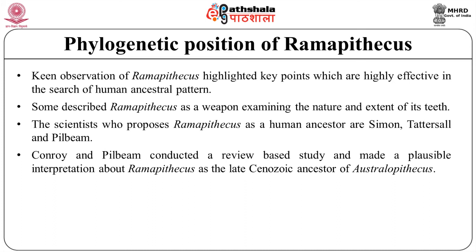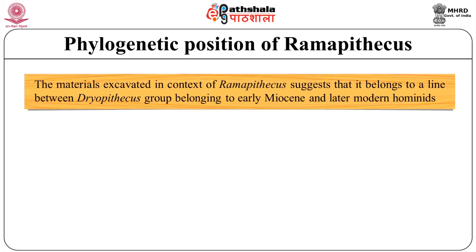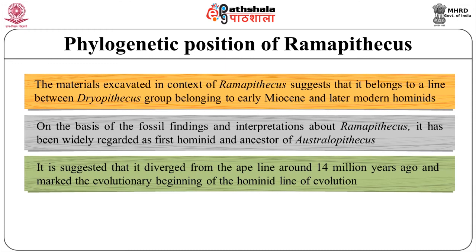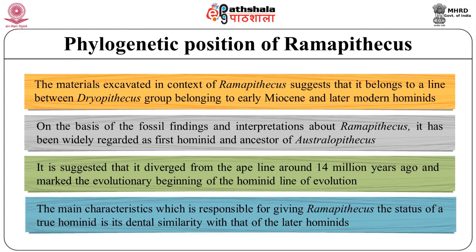Conroy and Pilbeam conducted a review-based study and made a plausible interpretation about Ramapithecus as the late Cenozoic ancestor of Australopithecus. However, the material excavated in the context of Ramapithecus suggests it belonged to the line between the Dryopithecus group of the early Miocene and later modern hominids. On the basis of fossil findings and interpretation, Ramapithecus has been widely regarded as the first hominid and ancestor of Australopithecus. It is suggested that it diverged from the ape line around 14 million years ago, marking the evolutionary beginning of the hominid line. The main characteristic responsible for giving Ramapithecus the status of a true hominid is its dental similarity with later hominids.